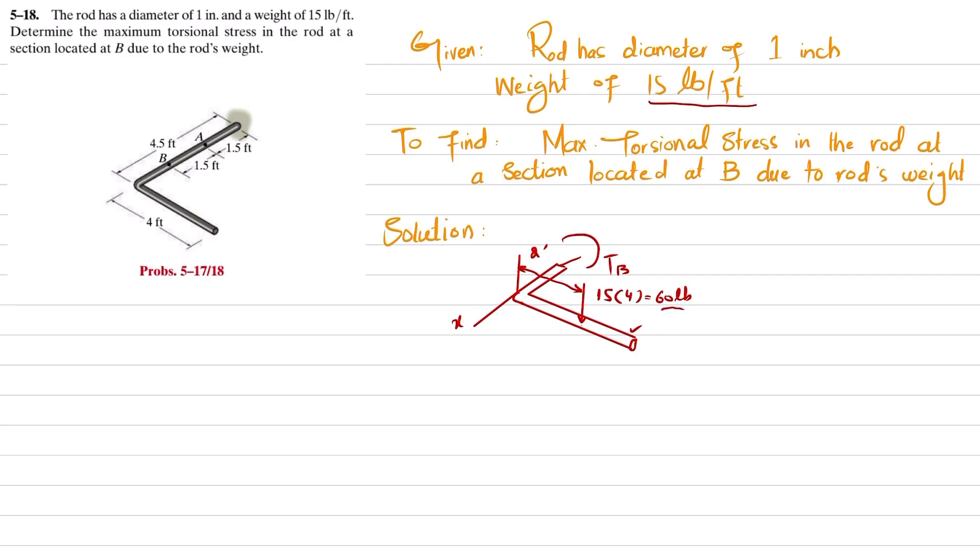We will find the moment. Sum of all moments about the x-axis equals zero, taking counterclockwise moments as positive. About the x-axis, one moment is due to this force with perpendicular distance of 2 feet, and it will be clockwise, so minus 15 times 4 times 2 plus T_B equals zero. From here, you get T_B equals 120 pound-feet.